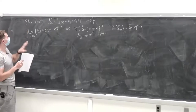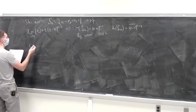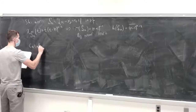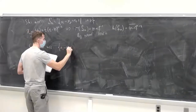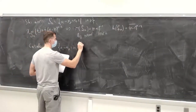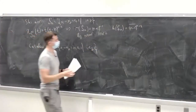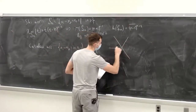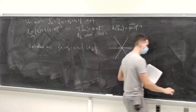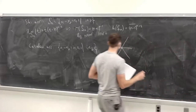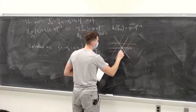Today I want to finish the hyperplane arrangement sections and mention the Catalan arrangement, which is also going to be in the homework. The Catalan arrangement is defined by xi minus xj equal to negative 1, 0, or 1, where i is less than j. The picture to remember is: I take the braid arrangement and then add — in orange — a hyperplane above and below each of my original hyperplanes.